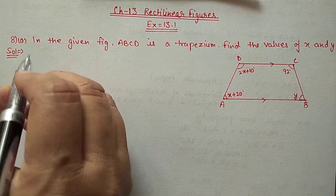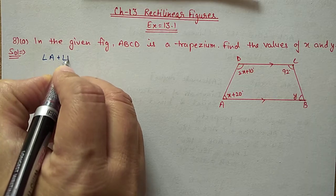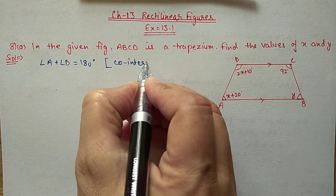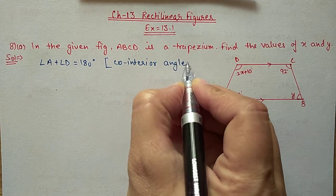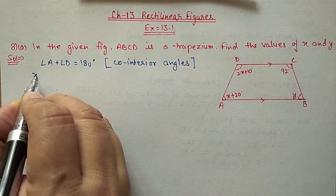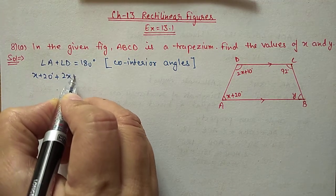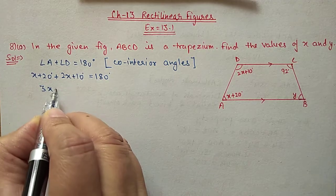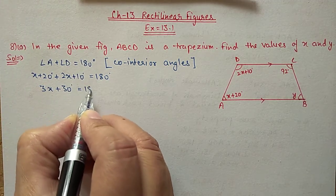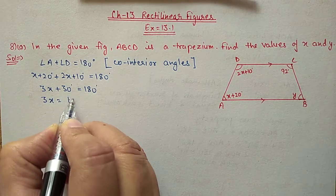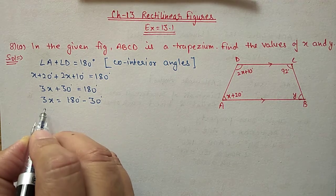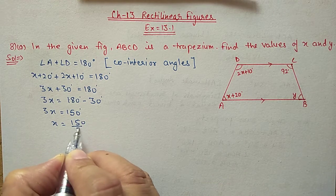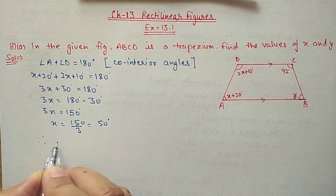So first we will take angle A plus angle D is equal to 180 degrees. Reason: co-interior angles. A is X plus 20 and D is 2X plus 10, these two are equal to 180 degrees. So X plus 2X will become 3X, 20 plus 10 will become 30, equal to 180. Shifting 30 to the other side, 3X is equal to 150 degrees, so X value will be 150 divided by 3, equal to 50 degrees.